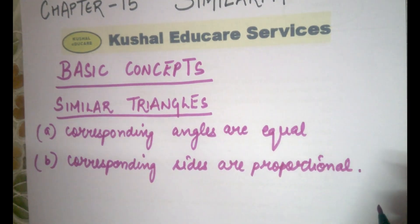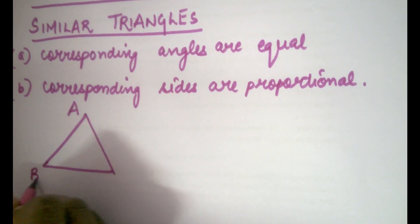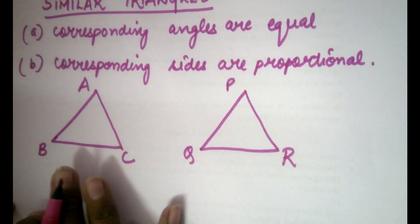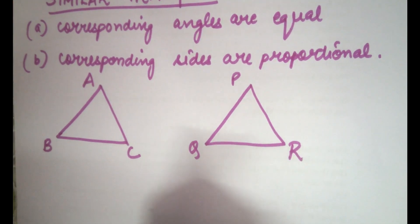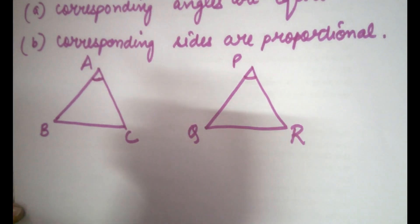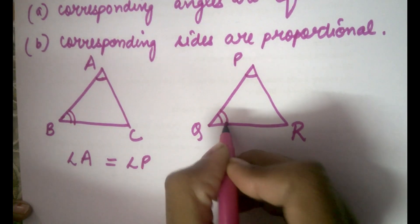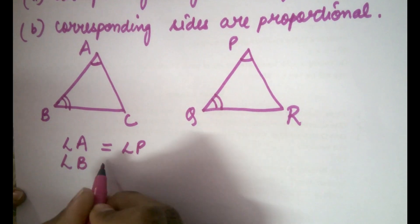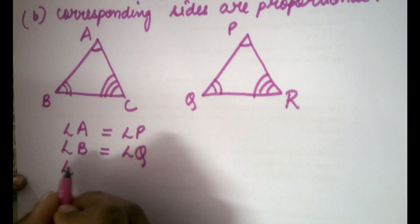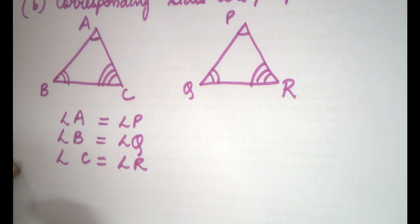We will understand this with the help of an example. We take two triangles: triangle ABC and triangle PQR. These two triangles will be similar when their corresponding angles are equal — angle A equals angle P, angle B equals angle Q, and angle C equals angle R — and when their corresponding sides are proportional.